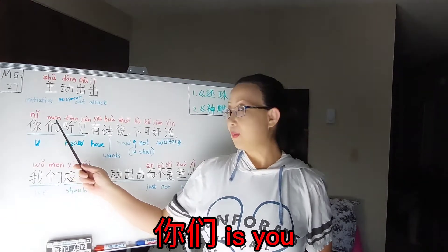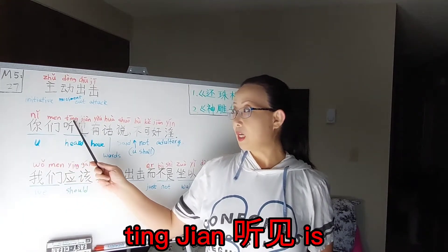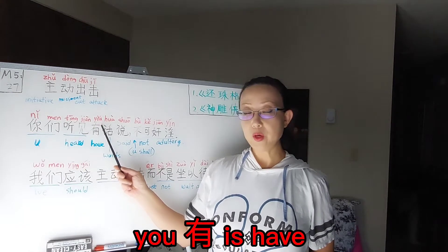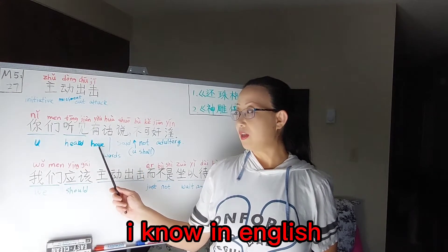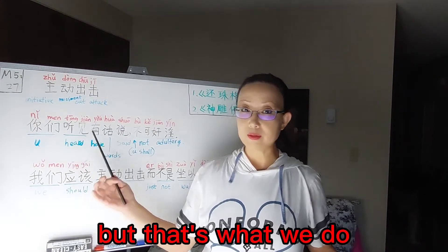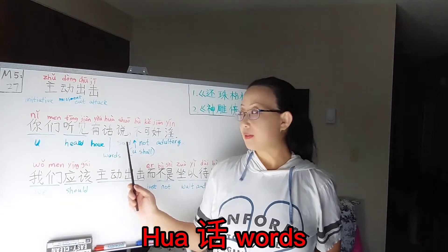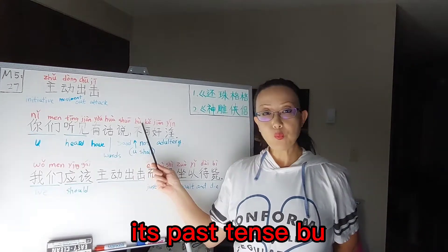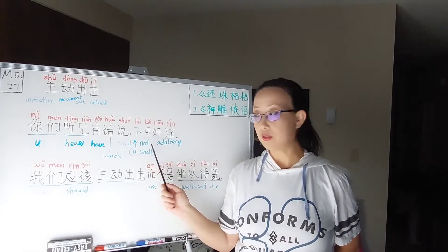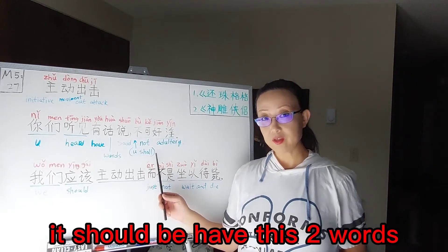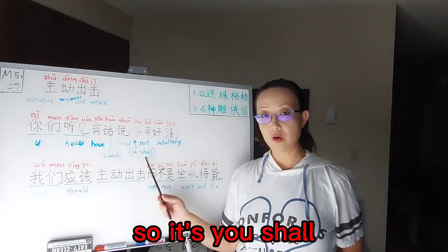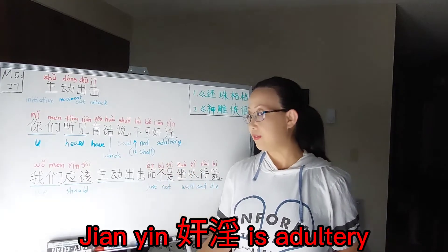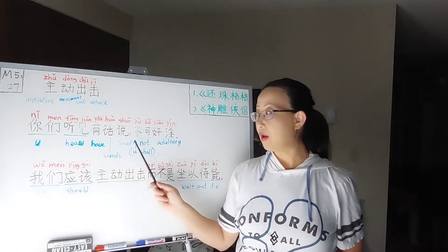Let's go over our sentence. 你们 is 'you'. 听见 is 'heard'. 有 is 'have'. 话 is 'words'. 说 is 'speak' or 'said' — in this case it's past tense. 不可 is 'not'. So the sentence is: 你们听见有话说，不可奸淫。 奸淫 is 'adultery'. Guys, no license.